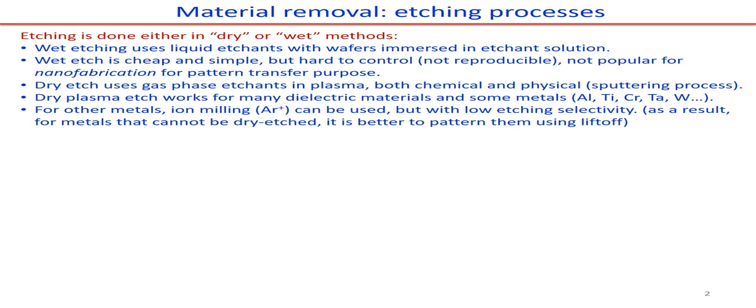So what is etching? Etching is material removal, done either in a dry or a wet method. Wet etching uses liquid etchants with wafers immersed in the etchant solution. Wet etching is generally cheap and simple but hard to control and not popular for nanofabrication pattern transfer purposes. Dry etch uses gas phase etchants in plasma, either chemical or physical, generally the sputtering process. Dry plasma etch works for many dielectric materials and some metals. For metals that cannot be dry etched, it is better to pattern them using a lift-off process.